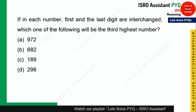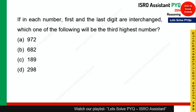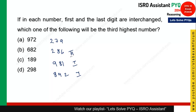This question asks: if the first and last digits of each number are interchanged, which will be the third highest number? After interchanging: 279 stays relevant, 286 becomes 682, 981 becomes 189, 892 becomes 298. Arranging in descending order, the third highest is Option B, which is the correct answer.